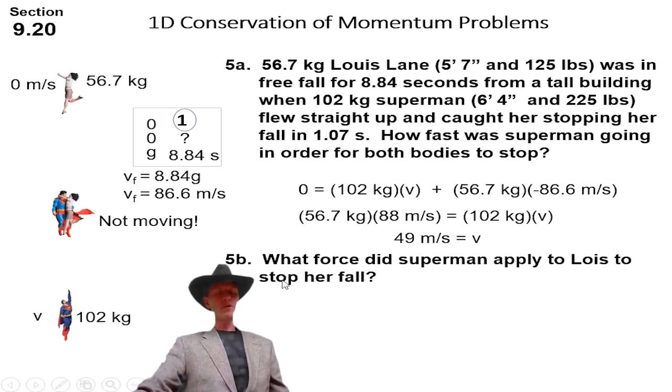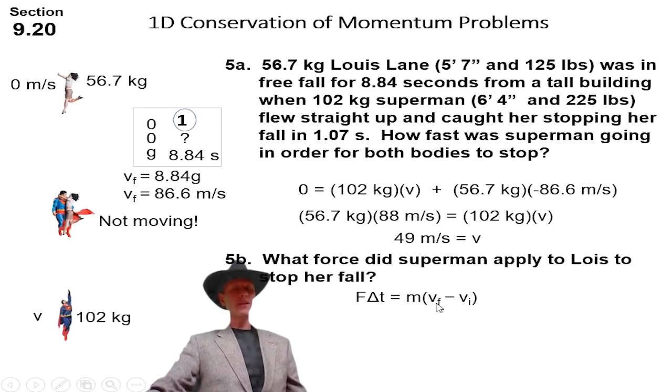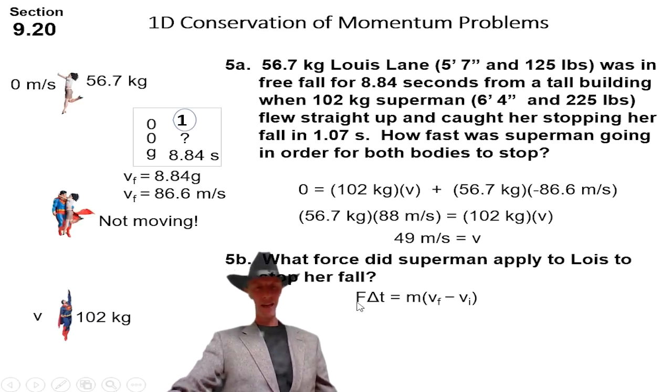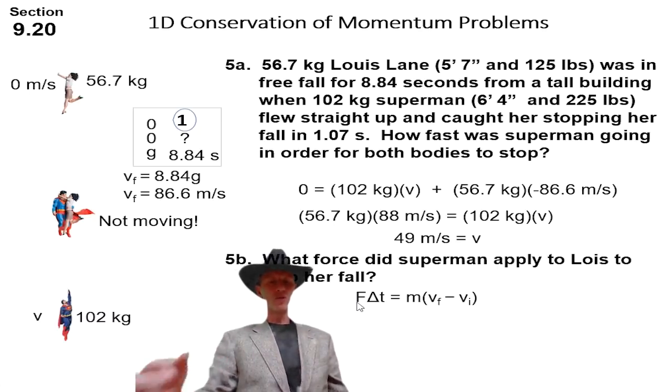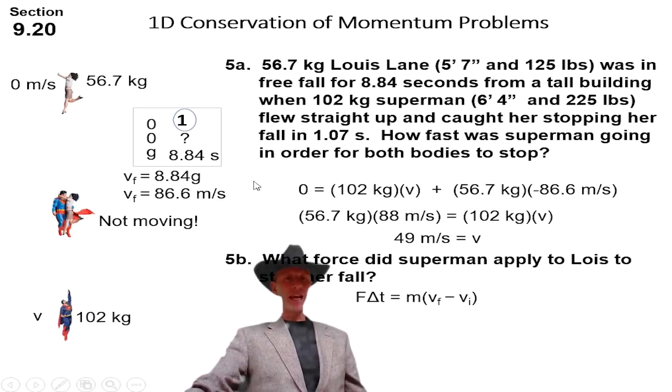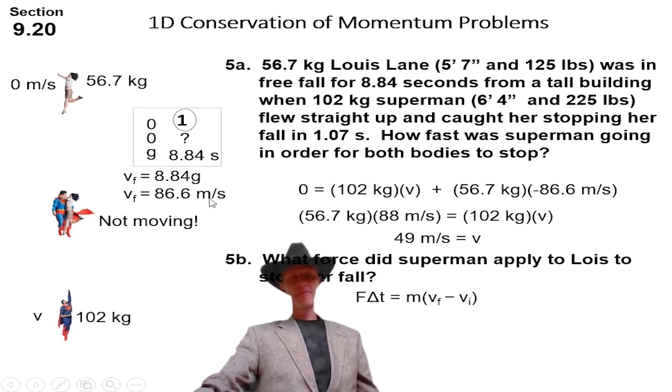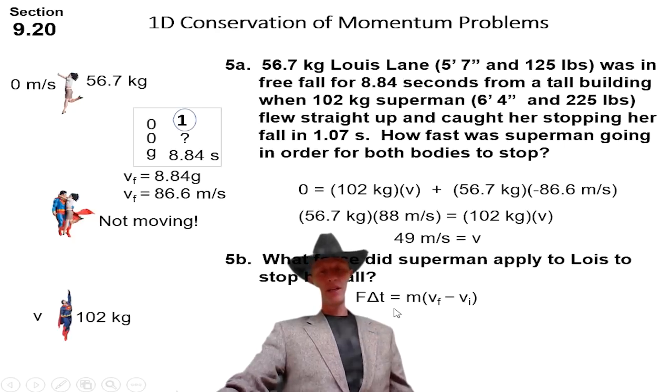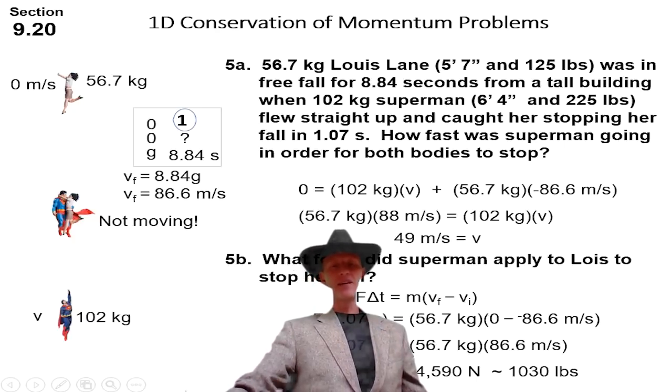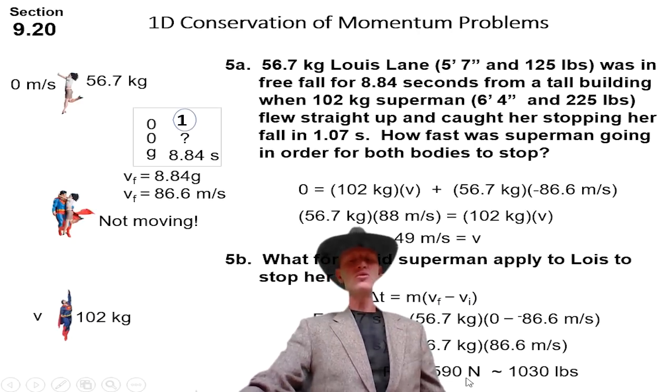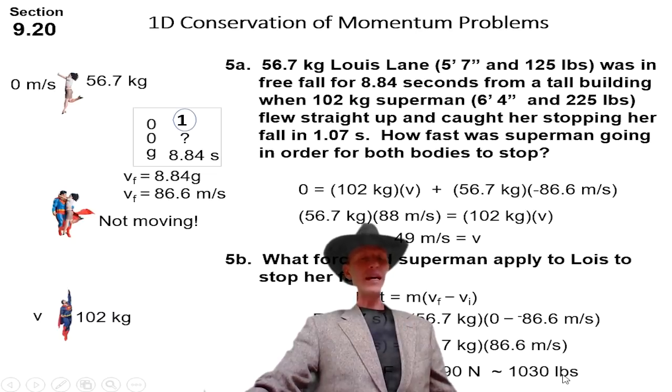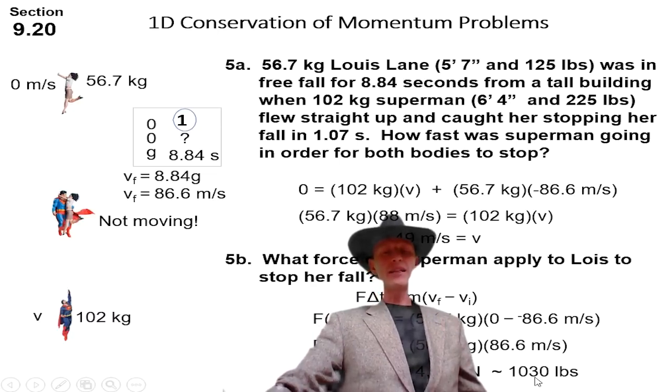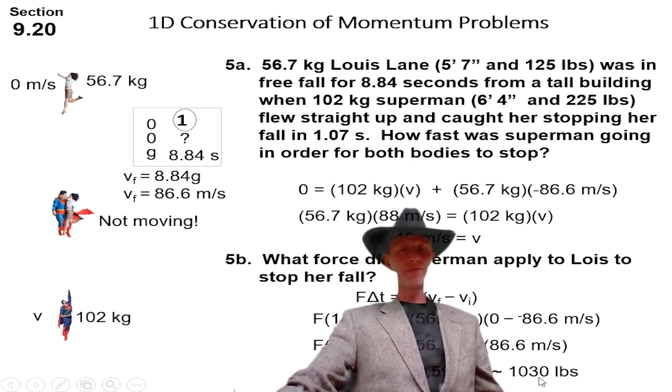So if her body stopped in 1.07 seconds, we could use our impulse momentum theorem to figure out the force on her body, really the force on her head. She doesn't even grab the head. He holds her like a baby. So her head goes from 86.6 meters per second to zero in one second. And that is the tragedy that would kill somebody. But these calculations give us a value of 4,590 newtons. That's about a thousand pounds. So that is an excessive amount of force being applied to the head. And that's pretty close to 50 Gs, 50 Gs of force.